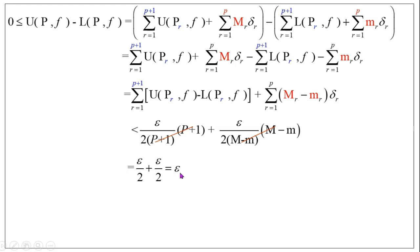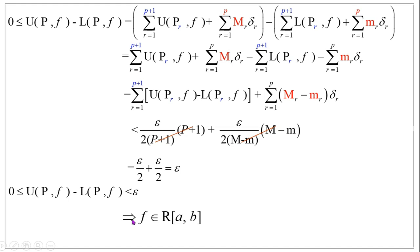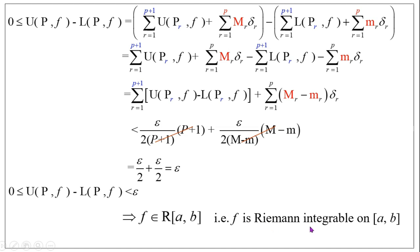Therefore 0 ≤ U(P, f) − L(P, f) < ε. By the necessary and sufficient condition for a bounded function to be Riemann integrable, the given function f is Riemann integrable. That is, f ∈ R[a, b], meaning f is Riemann integrable on the closed interval [a, b].